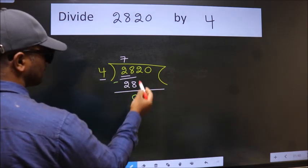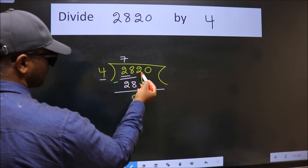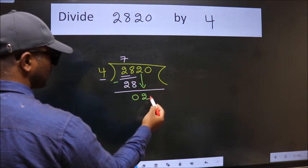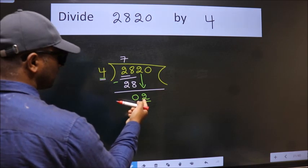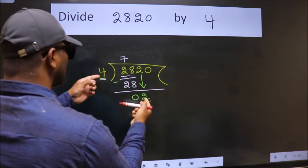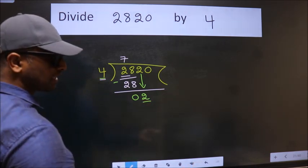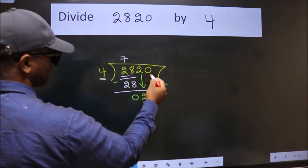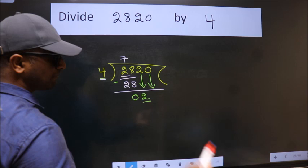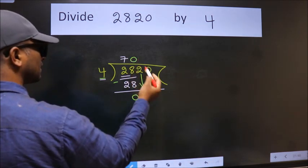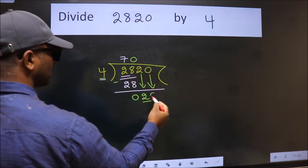After this, bring down the beside number. So, 2 down. Here we have 2, here 4. 2 is smaller than 4, so we should bring down the second number. And the rule to bring down the second number is put 0 here. Then only we can bring this number down.